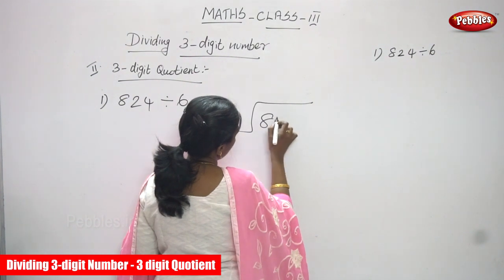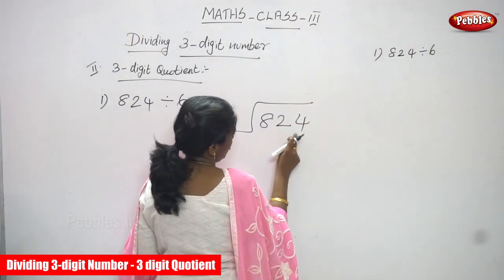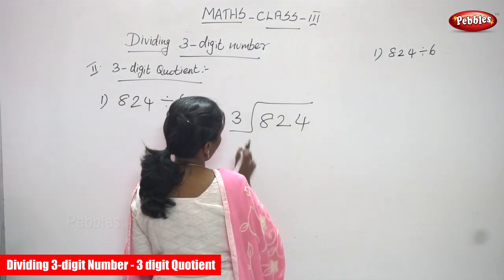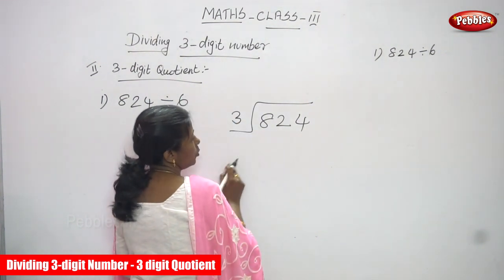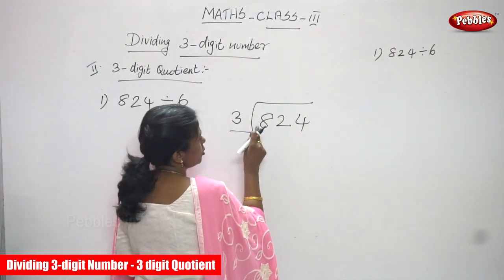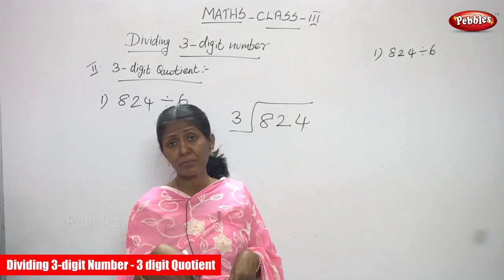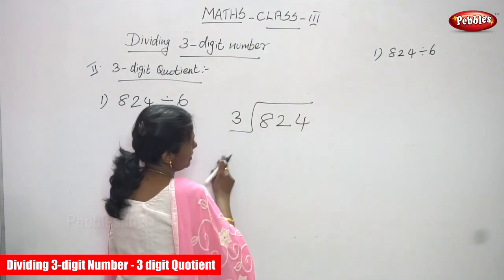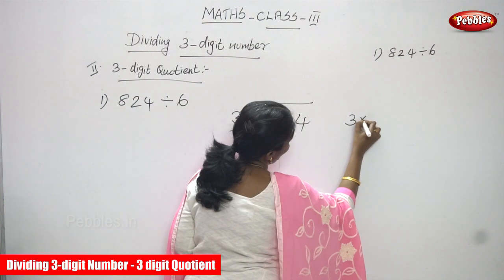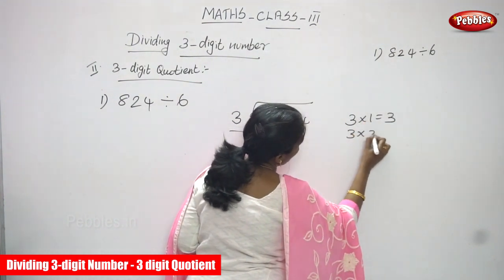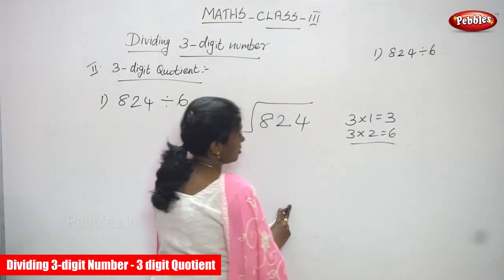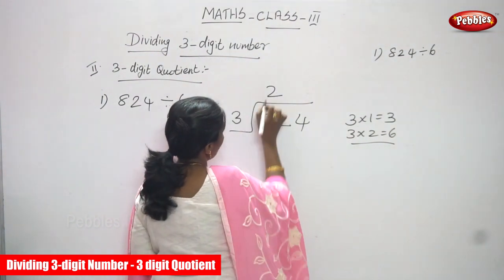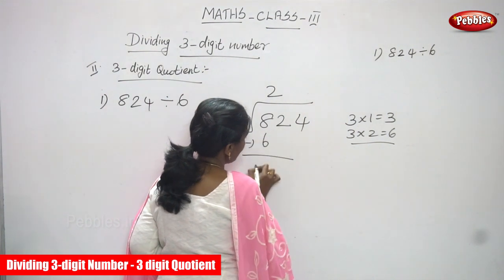So 8, 2, and 4 — hundreds, tens, and ones. It's a 3-digit number. Now we are going to divide by a single-digit number. First you have to start with the hundreds place value. You have to compare only the numbers, not the place values. So 8 is compared with 3. 8 is greater than 3, so it's enough to divide. You must use the 3 table. 3 ones are 3, 3 twos are 6 — stop here, because 3 threes are 9 which exceeds 8. So 3 twos are 6. Now subtract: 8 minus 6 you can get 2.